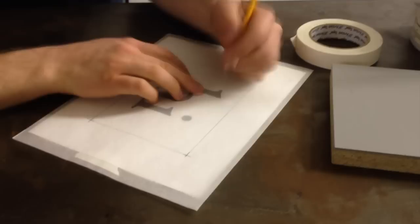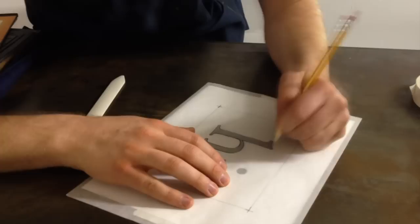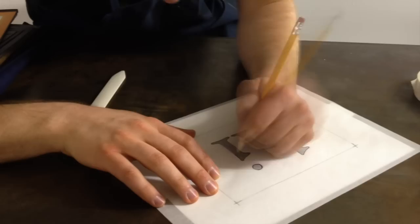I'll outline with a pencil on the tracing paper my artwork. Now, one thing to be sure of is to always do your artwork the way you want it to look, so write-reading. It will be reversed but we'll take care of that soon.